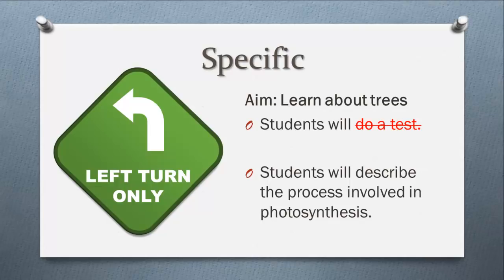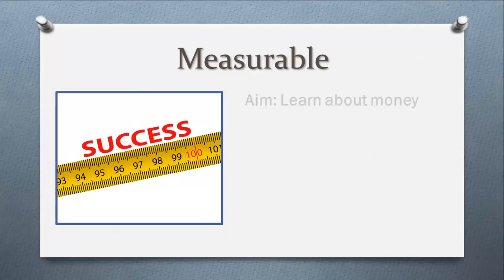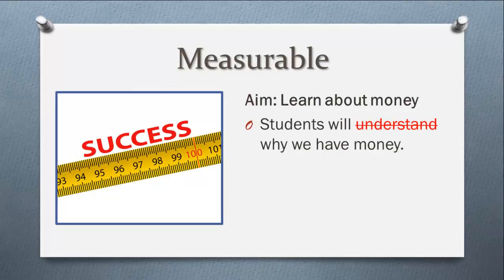It is extremely important that your objectives are measurable. This means that you can actually carry out some form of assessment to check that your objectives have been met. If your aim was to learn about money, you might write the objective students will understand why we have money. But we have no way to test whether a student has understood something. You could ask them and even though they say they have, they haven't. So we could change this to students will give at least one reason for money. This is measured by default as each student will give a reason and you can check that it is correct.